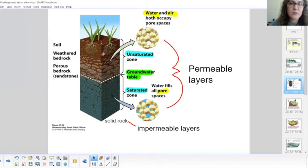So up here you have the water and air, both occupied pores and spaces. And all of this layer where there is rock, where water can seep in, we call this a permeable layer. It means water can go through it.